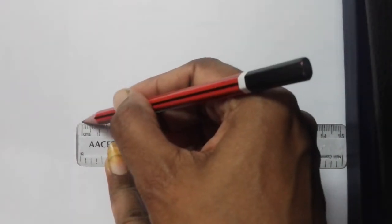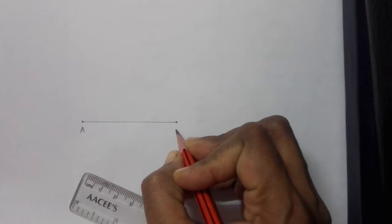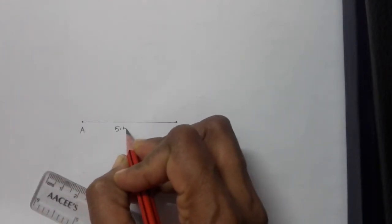Now, join both the points and label it. This is A and this is B. The length of this is 5.5 centimeters.